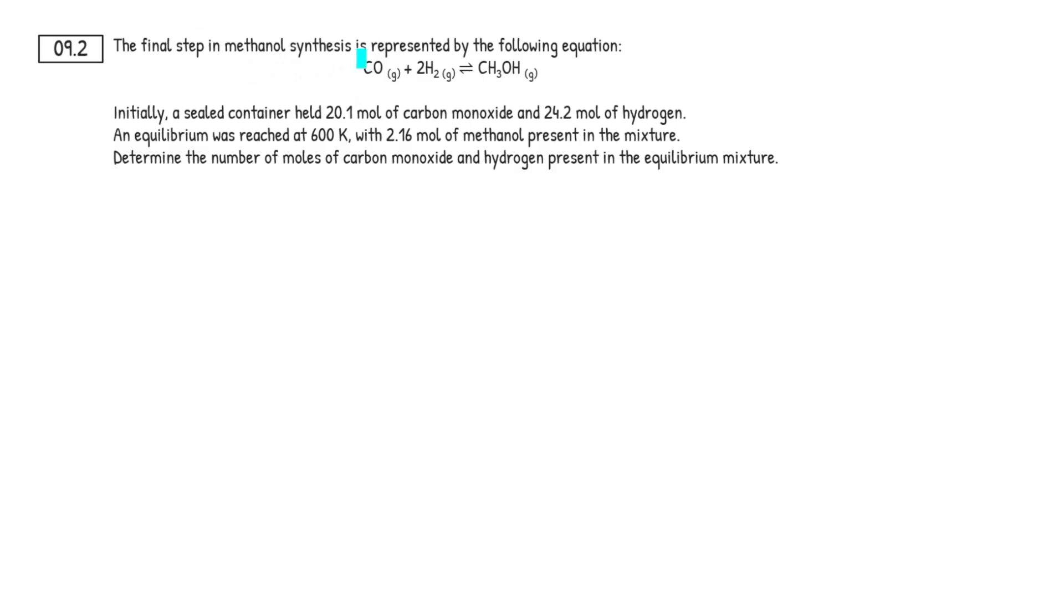So the final step in methanol synthesis is represented by the following equation. We've got an equilibrium going on here. Initially, a sealed container held 20.1 mole of carbon monoxide and 24.2 mole of hydrogen.